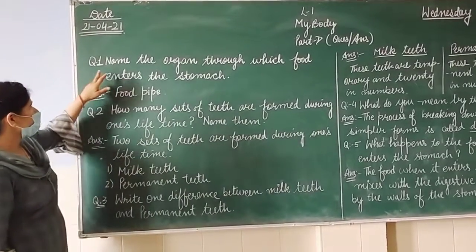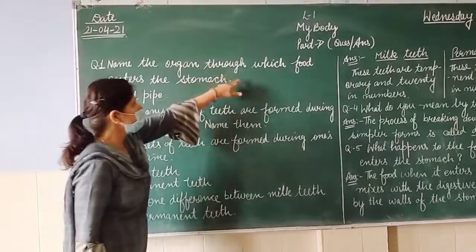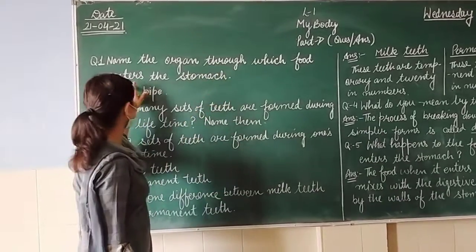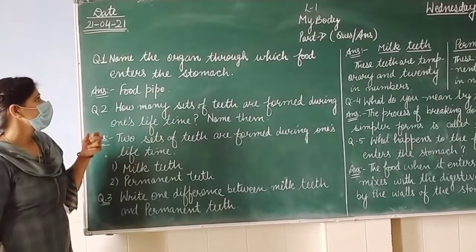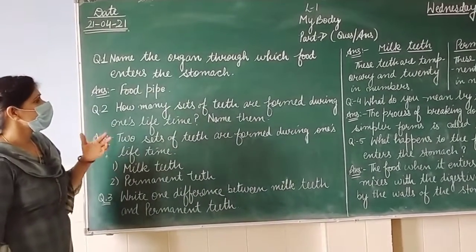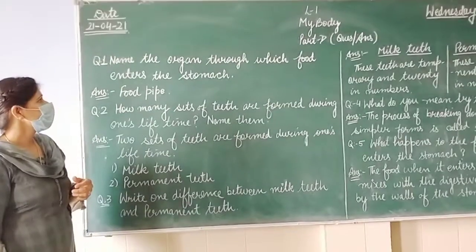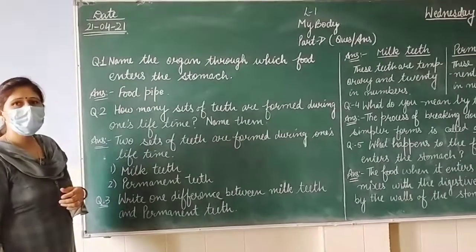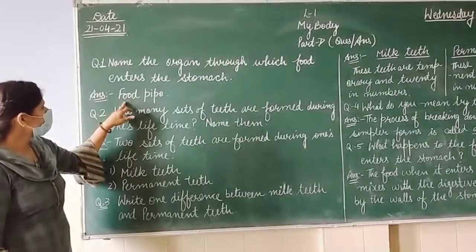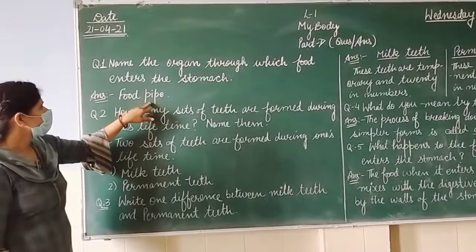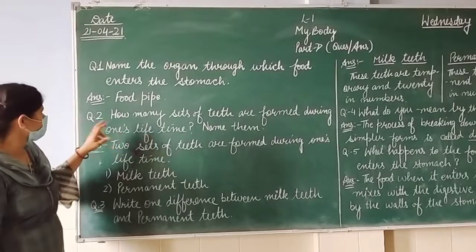Question number 1 is: name the organ through which food enters the stomach. Yeh question hai — us organ ka naam batana hai jis se khana stomach mein enter karta hai. So the answer is: food pipe. Food pipe se khana stomach mein enter karta hai.